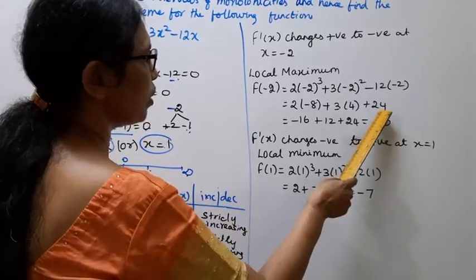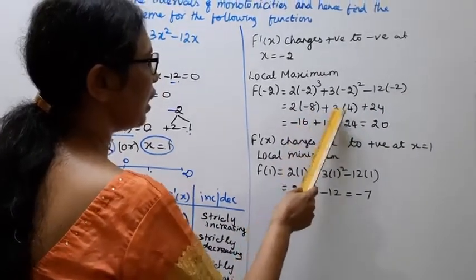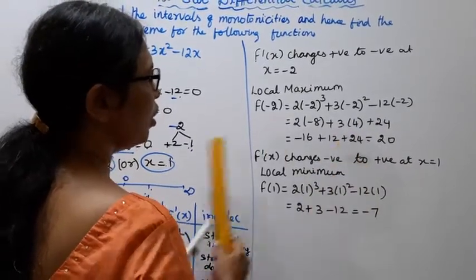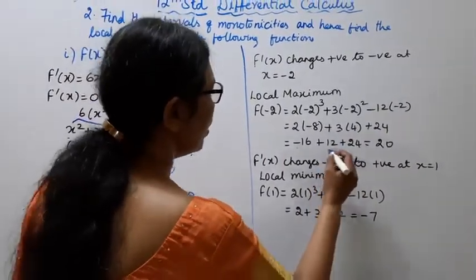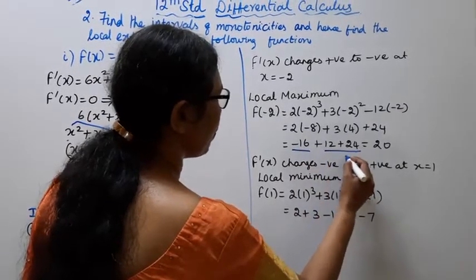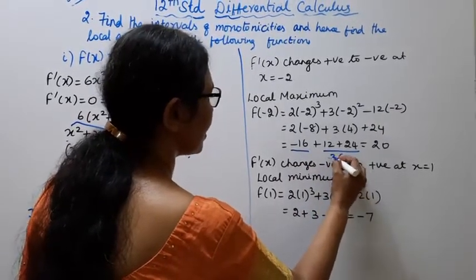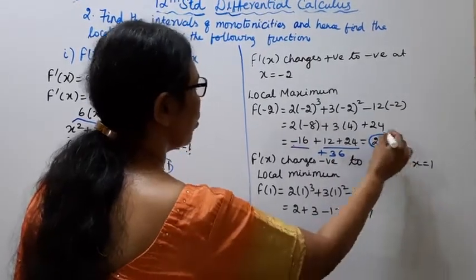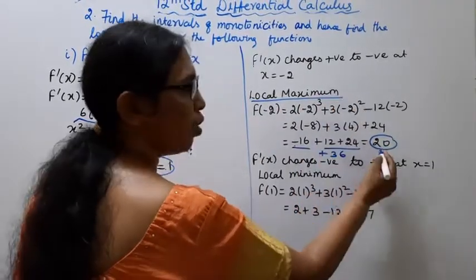2 into minus 8 minus 16, plus 3 into 4 plus 12, plus 24. 2 into minus 8 minus 16, 3 fours are 12 plus 24. Minus 16 plus 36 minus 16, 20. Local maximum 20.